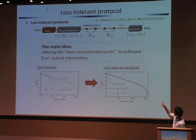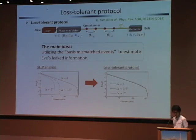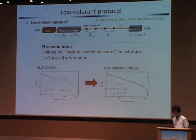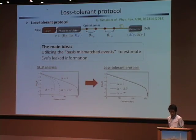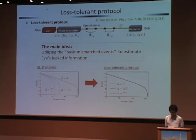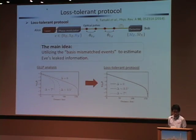Basically, in the Loss-Tolerant protocol, Alice's basis and bit information choice are from three states, not four, which is not typical. The reason for using three sending states is that three sending states are enough to estimate Eve's information. Thanks to MDI-QKD, we can overcome the security problem in the GWP analysis.